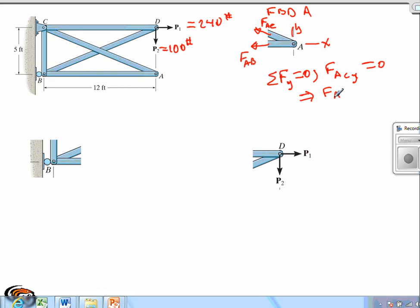If we sum forces along the X, notice we'll have the components of AC along the X and FAB. Since the whole force FACY is equal to zero then the components will also be equal to zero. So FAB must also be equal to zero.